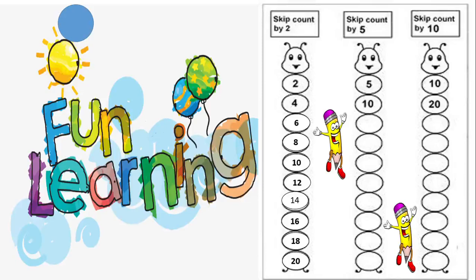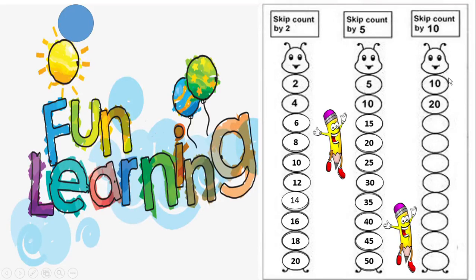Now let's move to skip count by 5s. Here we have 5 and 10. What comes next? It's 15. Very good. 20, 25, 30, 35, 40, 45. Very good. Now let's see skip count by 10s. Are you ready? We have 10 and 20 here. What comes next? It's 30. Very good children.